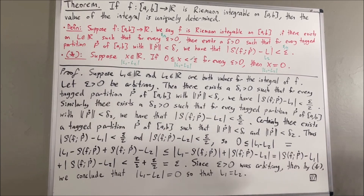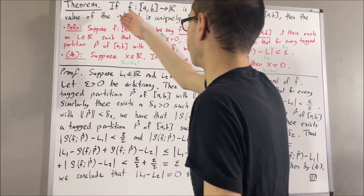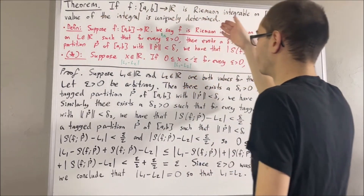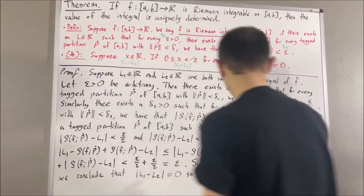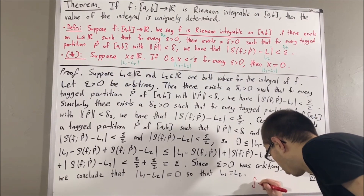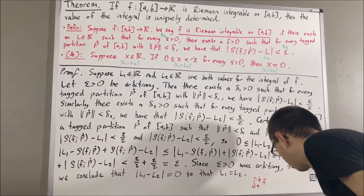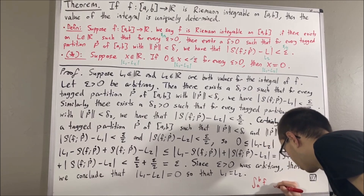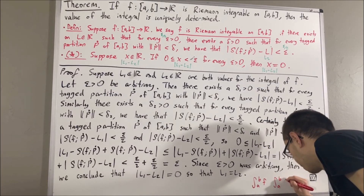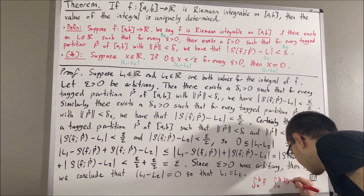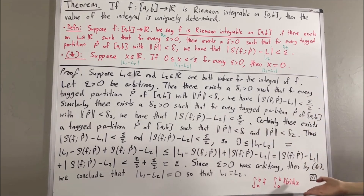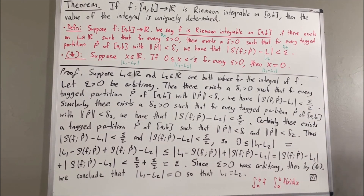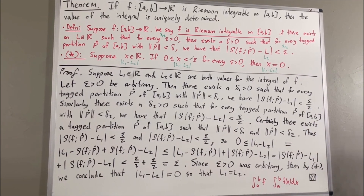The uniquely determined value of the integral is typically denoted as the integral from a to b of f, or the integral from a to b of f(x) dx. That's pretty much it for this video. Thank you.